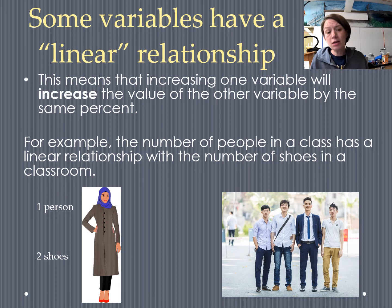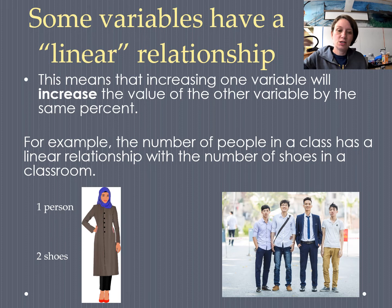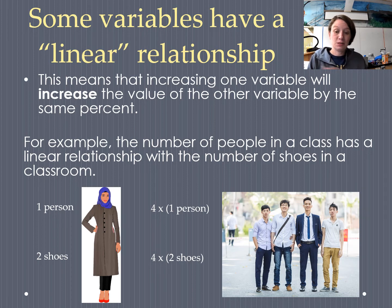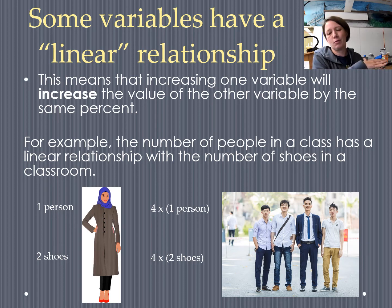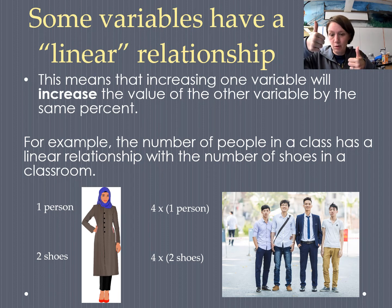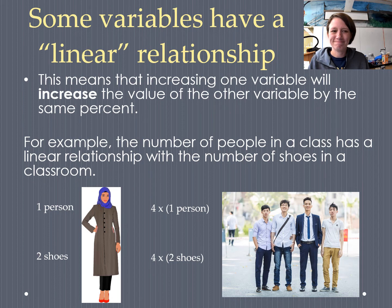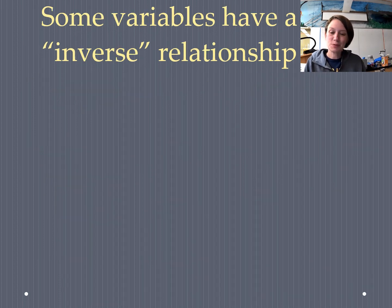We quadrupled the number of people, so the shoes should also have quadrupled — we're going to have four times as many shoes because we have four times as many people. Linear works in the other direction too: if I reduce the number of people in the class, the number of shoes goes down as well. So the variable going up makes the other go up, and the variable going down makes the other go down.